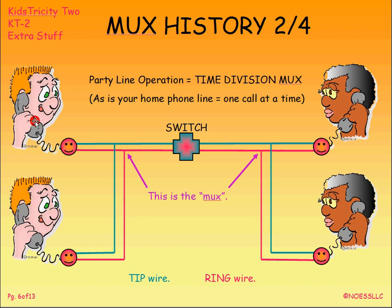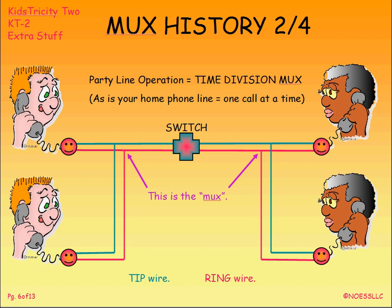Because this call is used for some length of time, then they drop off, and these two people can then use that same facility. A party line — it's really multiplexing in time.